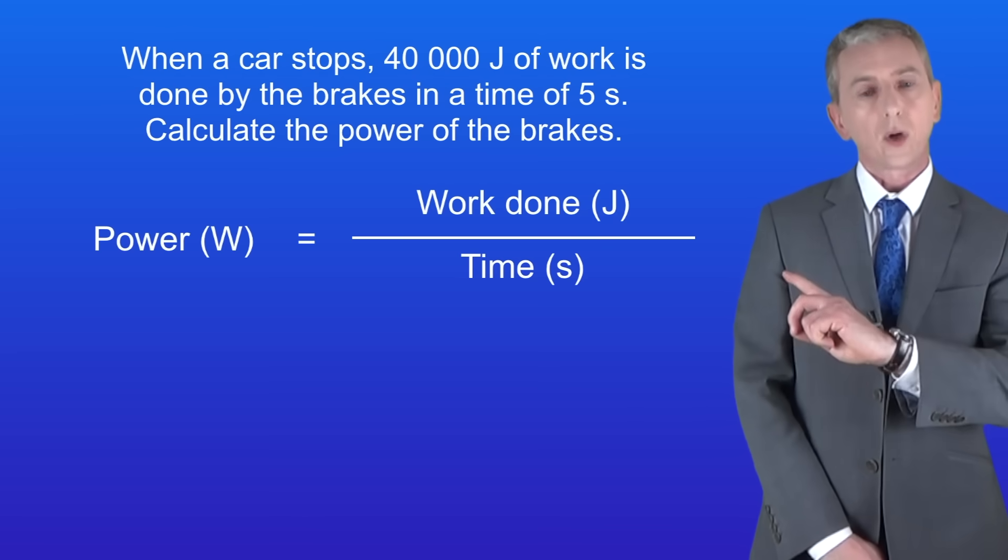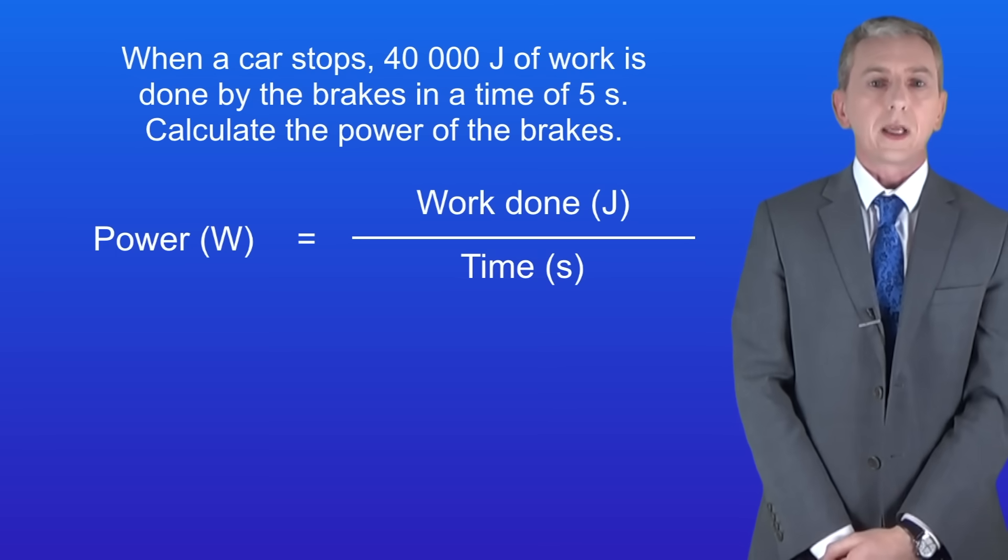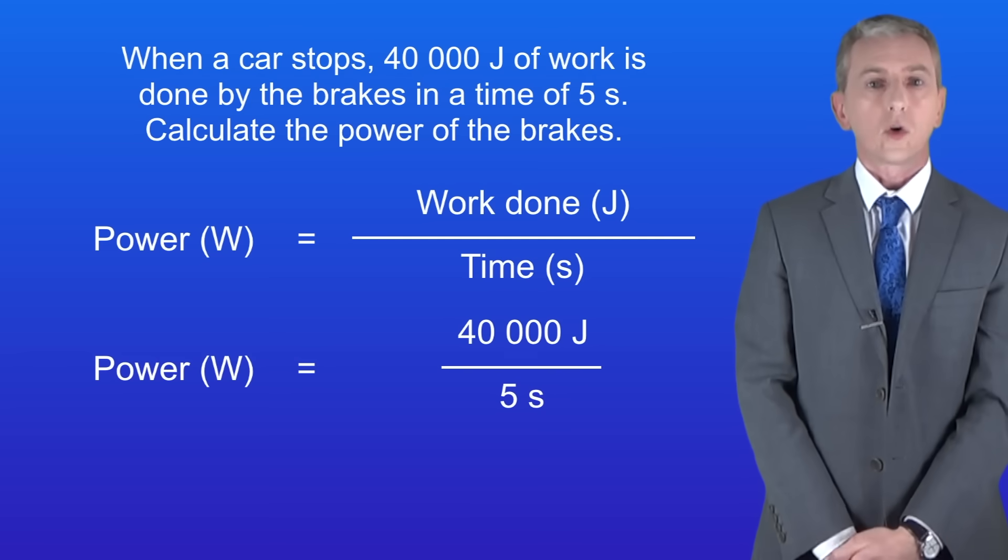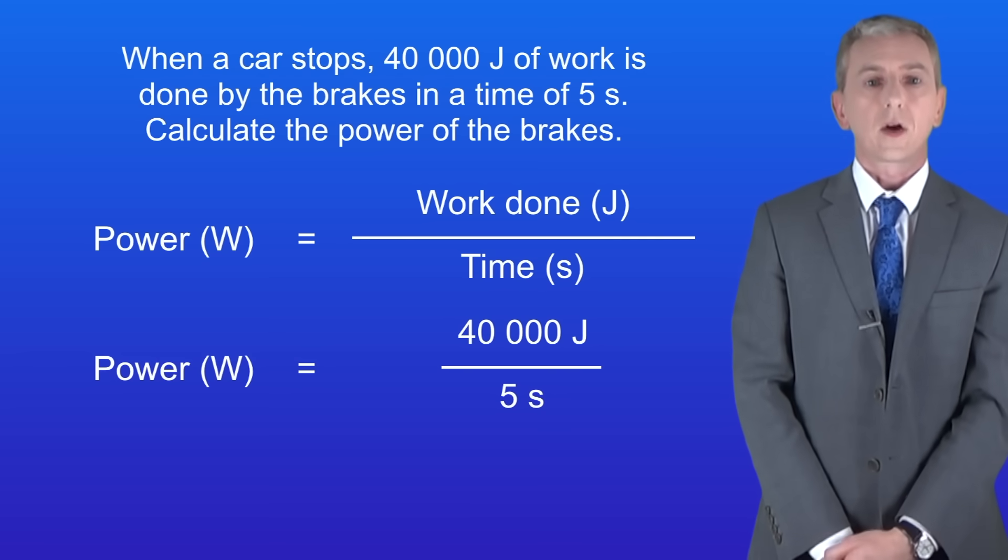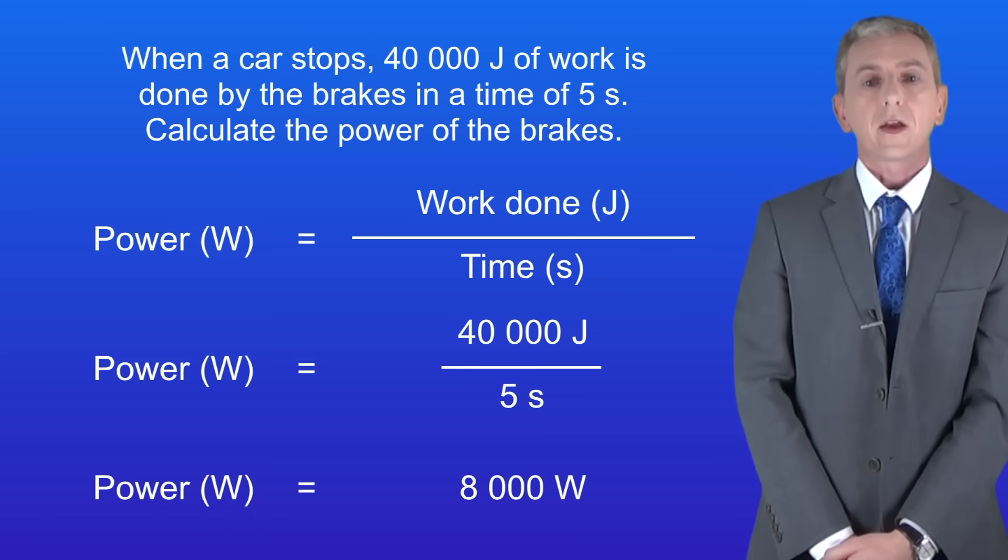Here's the equation that we need to use. Power equals work done in joules divided by the time in seconds. So the work done is 40,000 joules and the time is 5 seconds. Dividing 40,000 by 5 gives us a power of 8,000 watts and that's our final answer.